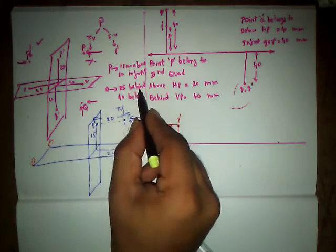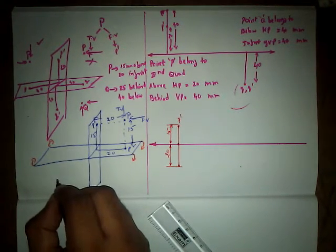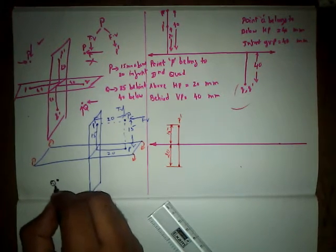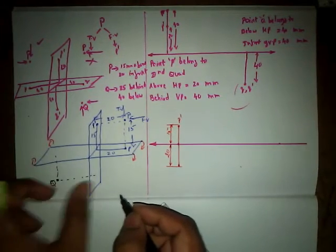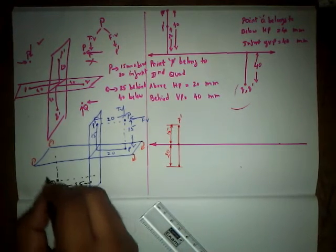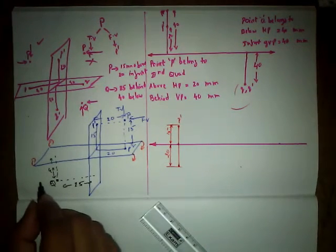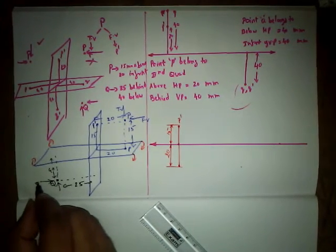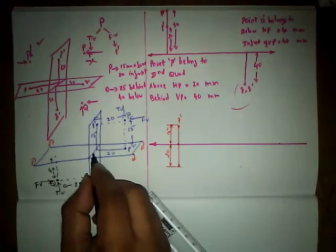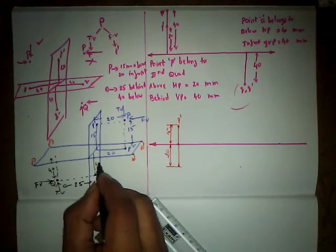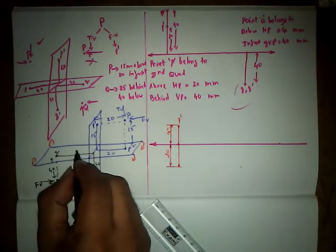For point Q: it is 25mm behind and 40mm below, so the combination is 'behind and below', meaning the point is going to lie in the third quadrant. Let us keep dotted lines. Below is 40mm and behind is 25mm. Now we see the front view and top view. The front view is Q' with a distance of 40mm, and the top view is q with a distance of 25mm.